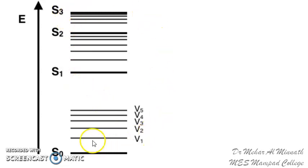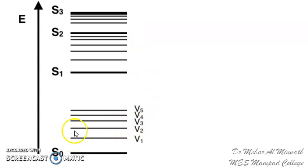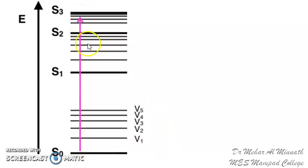The slide before you shows the various energy levels. S0 stands for the singlet ground state, S1 the singlet excited state, S2 the second excited state of the singlet electronic state, and so on. Within each energy level, there are also various vibrational energy levels. When a molecule absorbs photons, the energy is used for excitation from the ground state to a higher excited state — here, to a higher vibrational level of the second singlet excited state.